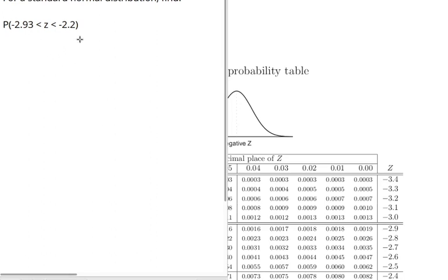So first off, we need to look up both of these two z-scores and find the probability to the left. The general strategy here is that if we take the higher z-score, in my case negative 2.2, and find the area to the left,